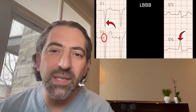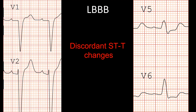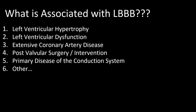One thing to note with the left bundle branch block pattern is the ST segment and the T waves become abnormal. You get what's called discordant STT changes. When the QRS complex is mostly negative, like leads V1 and V2, you'll get a small amount of ST elevation, usually less than one large square. And when the QRS complex is mostly positive, like leads V5 and V6, you'll get a small amount of ST depression, again usually less than one large square.